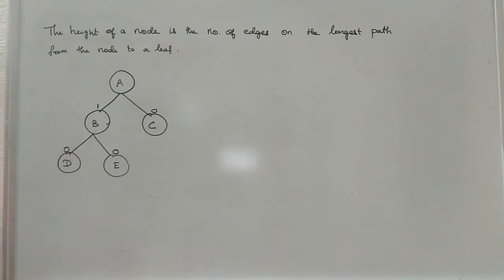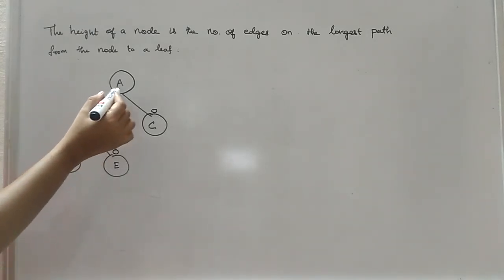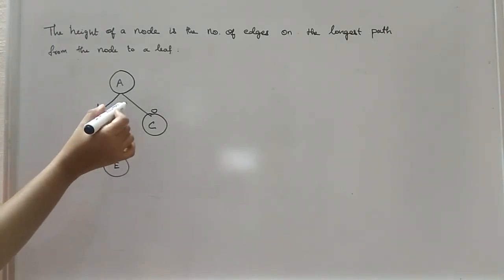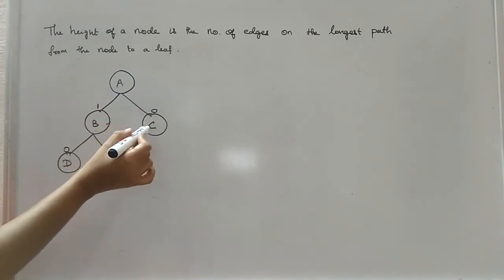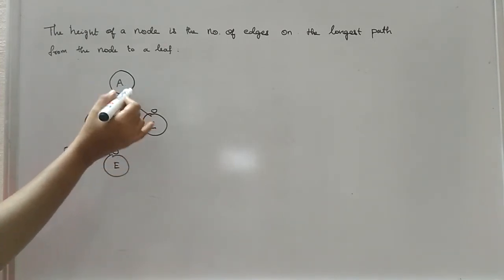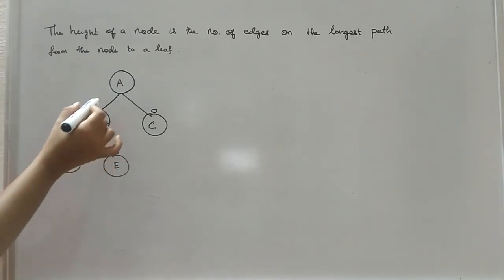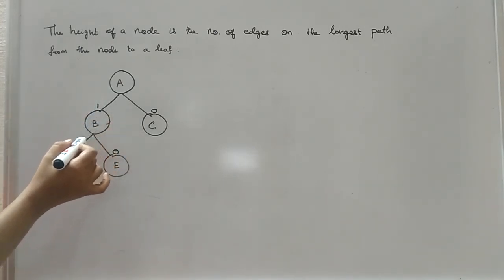And if you are taking the height for the A node, if you are taking the right hand side, you are having one. If you are looking on to the left hand side, how many edges are here?